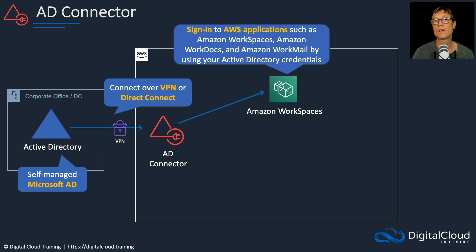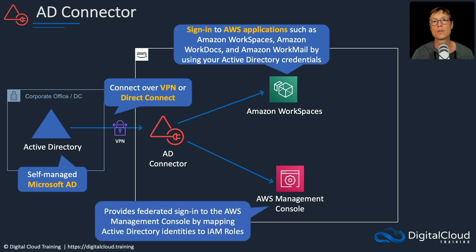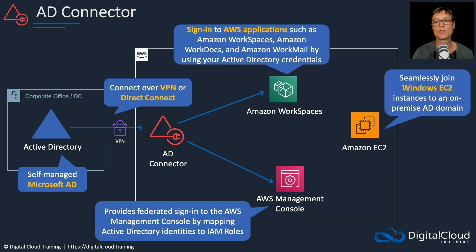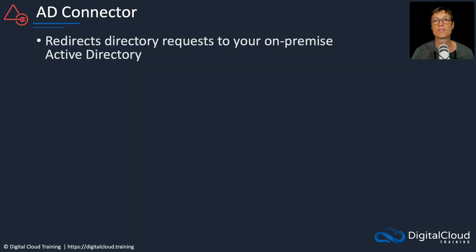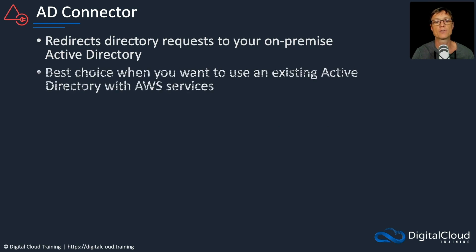With AD Connector, you can sign into AWS applications using your Active Directory credentials, giving you a federated sign-in to AWS. The AD Connector service maps your Active Directory credentials to IAM roles, which give you the permissions needed to connect to AWS services. You can also seamlessly join Windows EC2 instances to an on-premises AD domain. AD Connector redirects directory requests to your on-premises Active Directory and is the best choice when you want to use an existing Active Directory with AWS services.